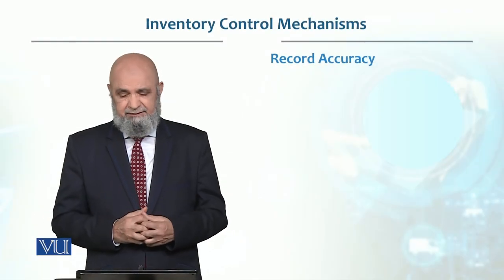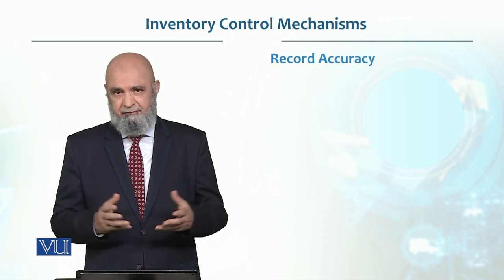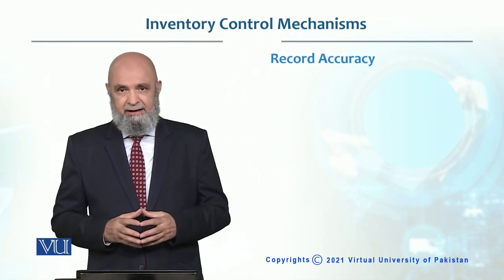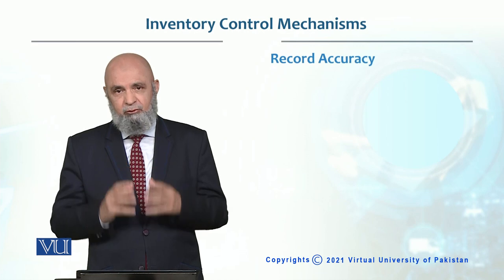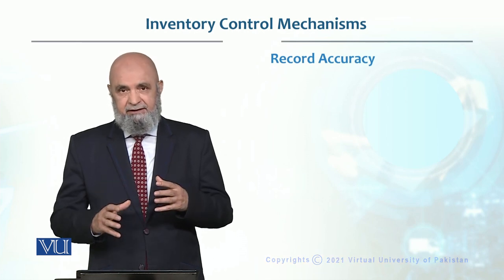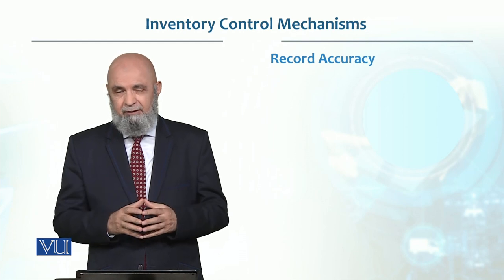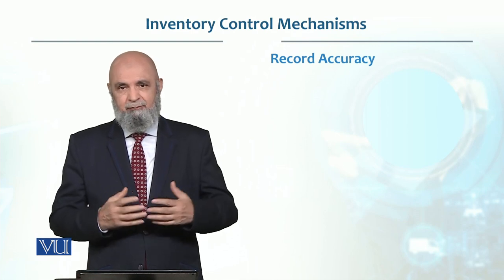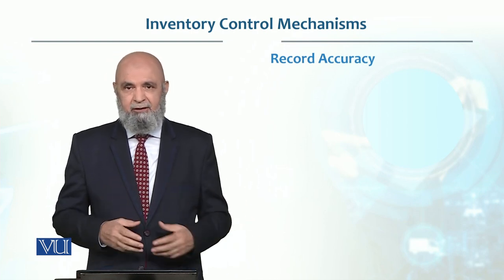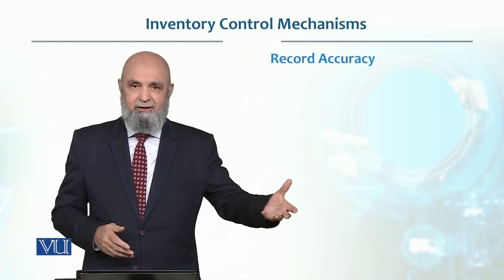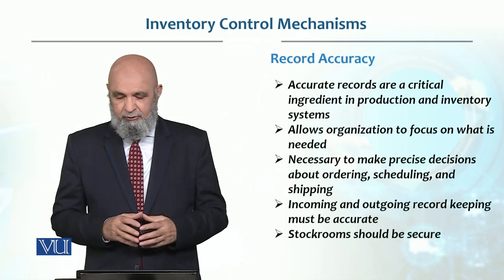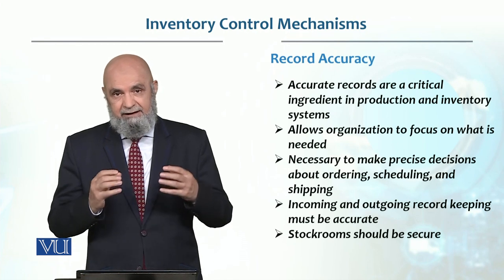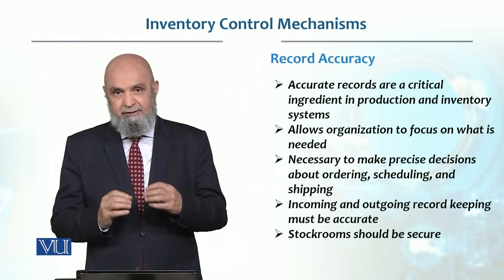Let's look at inventory mechanisms. There are three different things we have discussed. One is record accuracy. Inventory record accuracy is very important. If the record is not accurate, we will make a lot of mistakes. It is a critical ingredient in the production and inventory system. It is very important to maintain accurate records.